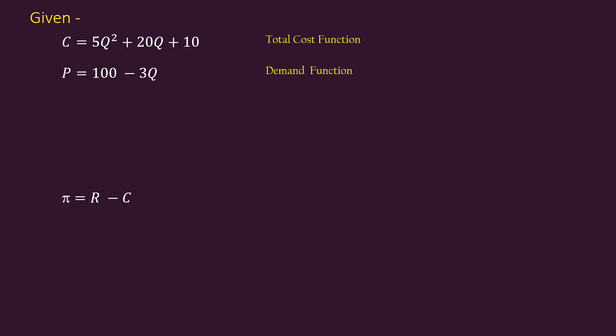Profit is revenue minus cost. Cost function is given directly. It is C equal to 5Q squared plus 20Q plus 10. Revenue function is not directly given.